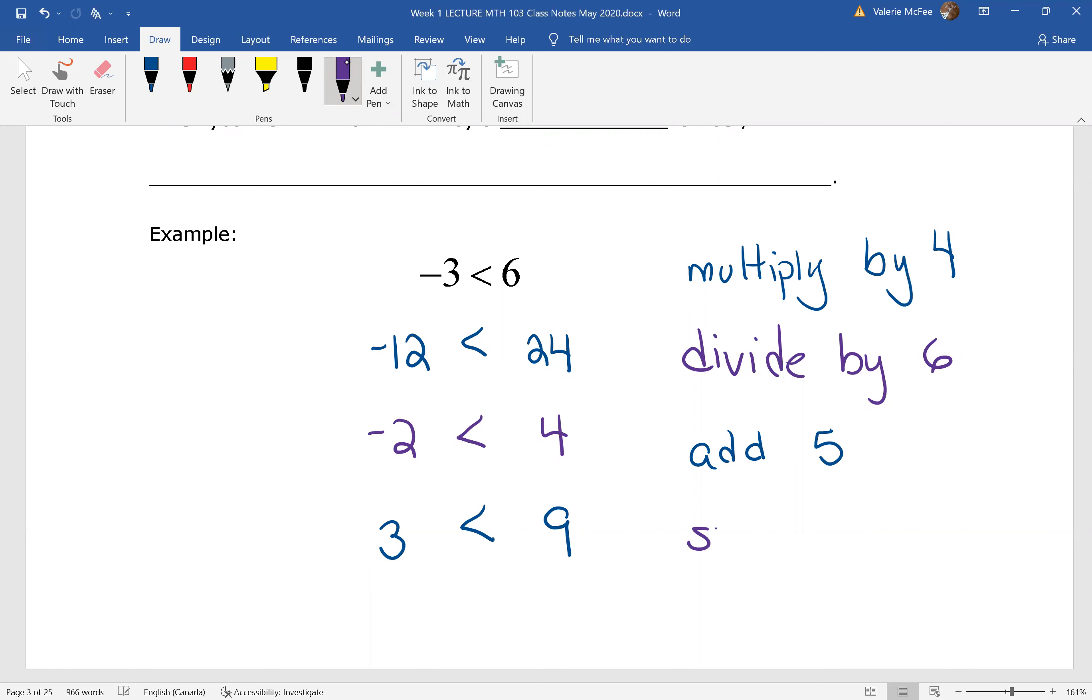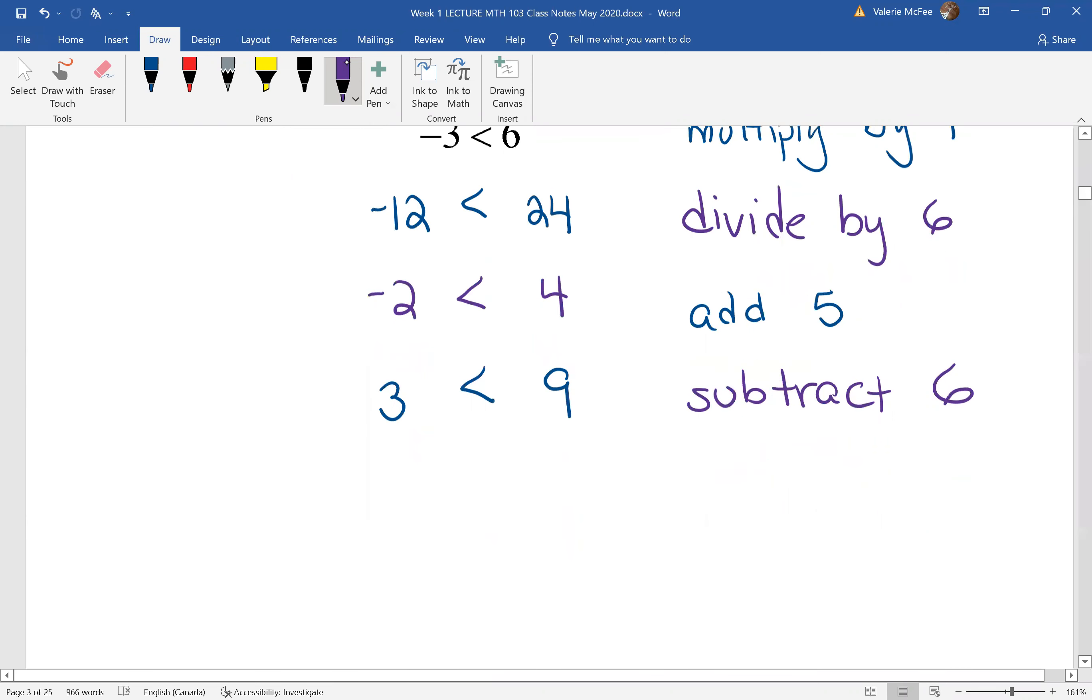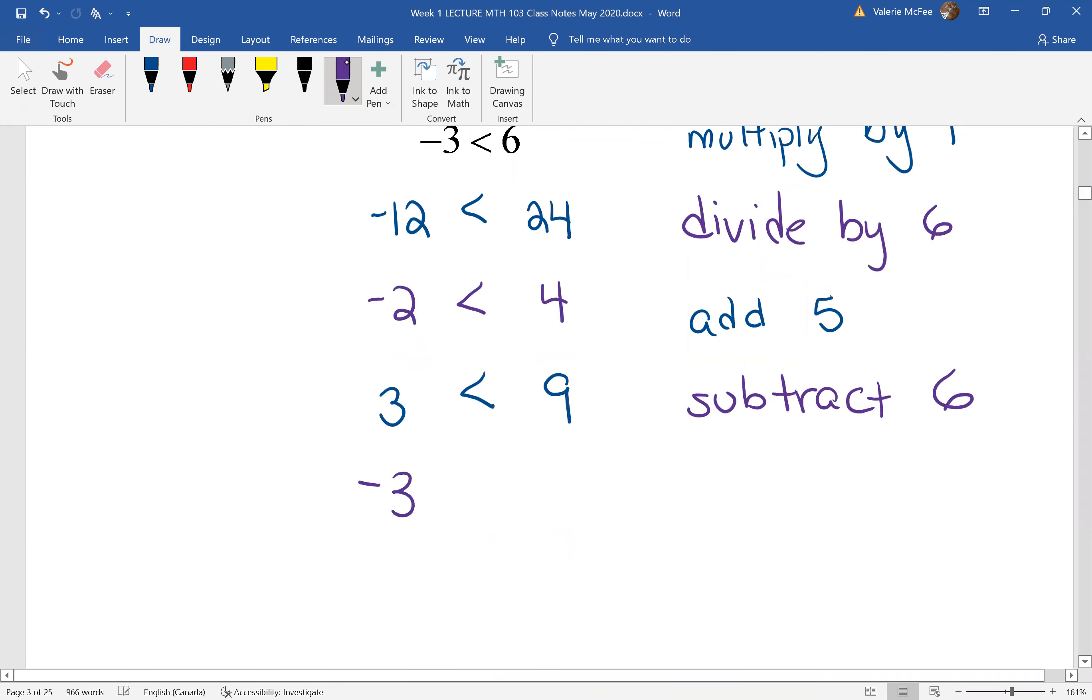We can subtract. I subtract six, I have negative three here, positive three here, and negative three is less than three. Right from the very beginning, when I added, subtracted, multiplied, and divided, the sign did not change direction.